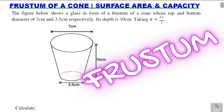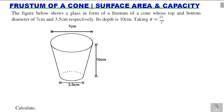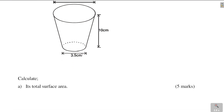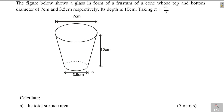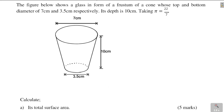Let's solve this problem on the frustum of a cone. It involves finding the surface area and also the capacity of the cone. The figure shows a glass in the form of a frustum of a cone whose top and bottom diameters are 7 centimeters and 3.5 centimeters respectively. Its depth is 10 centimeters, taking pi to be 22 over 7. You're supposed to calculate A, its total surface area — 5 marks, and B, its capacity — 5 marks.